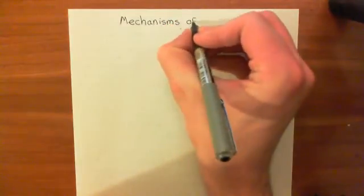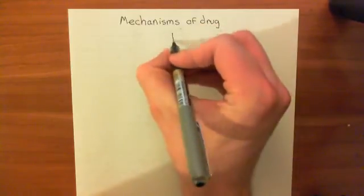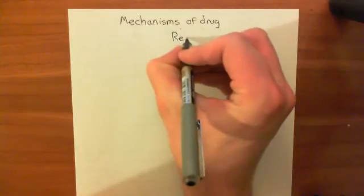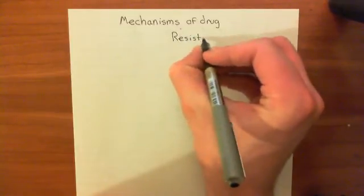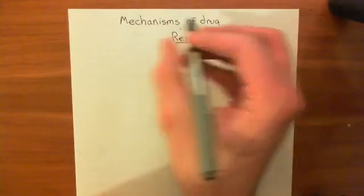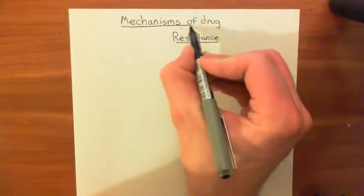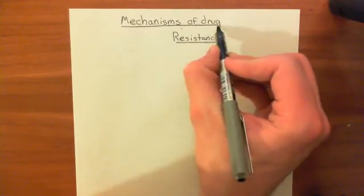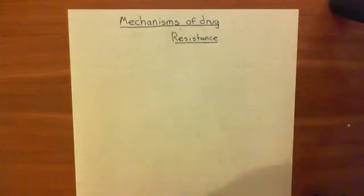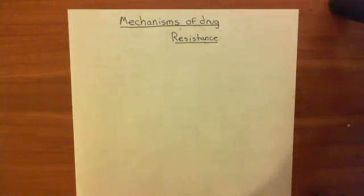Mechanisms of drug resistance is what we're going to look at, and we're specifically looking at mechanisms of drug resistance in bacteria, and obviously therefore the drugs are antibiotics. Because of course you can also get drug resistance in many other scenarios — for instance, cancer cells can become resistant to anti-cancer chemotherapy, and of course other pathogens can be treated with drugs and can become resistant to them as well. But antibiotic resistance is a huge topic, so we're looking at mechanisms of antibiotic resistance.